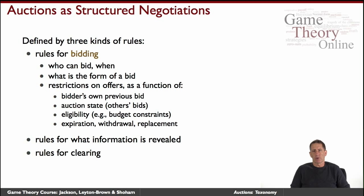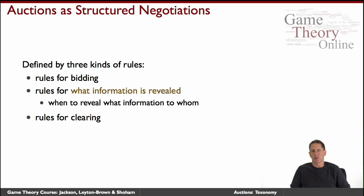Very importantly, there are the information disclosure rules. For example, in a sealed bid auction, when I bid, you don't see my bid — but do you know that I bid already? Do you know who the set of people bidding might be? Information dissemination is very critical to the marketplace and has to be explicitly specified.